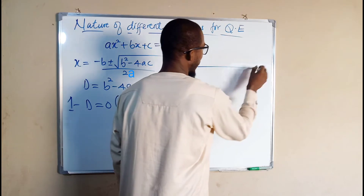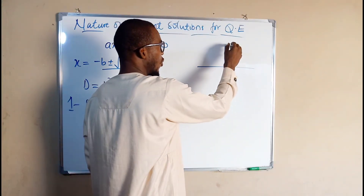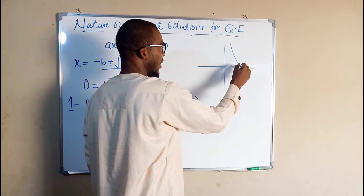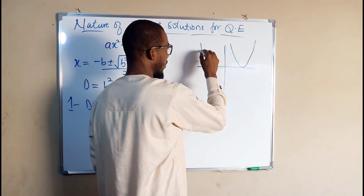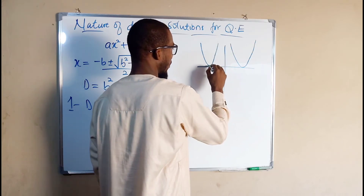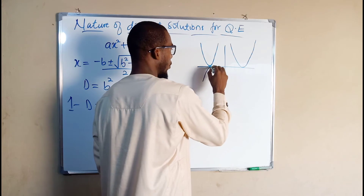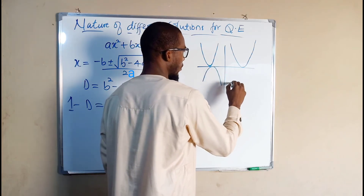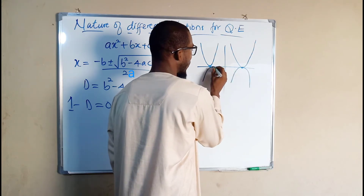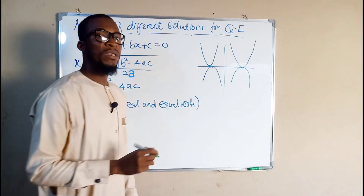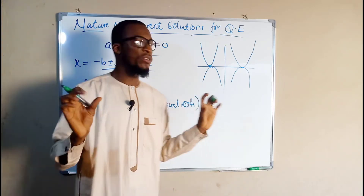We can see this on a graph where the curve touches the x-axis at one point — whether an open-up or open-down parabola — it touches the x-axis at exactly one point. We say that quadratic equation has real and equal roots.